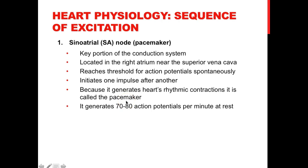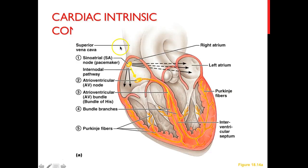When people refer to someone having a pacemaker in their heart, they mean an artificial pacemaker — because something is not quite functional about the SA node or the heart's own pacemakers and they need assistance with rhythmic contractions. The SA node can generate 70 to 80 action potentials per minute at rest. It's important to know the functions of the SA node and be able to identify it on a diagram.